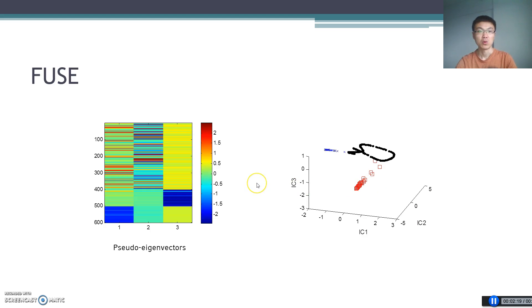Now, we give the results of fuse. From the pseudo eigenvectors space, we can see that the three clusters are separated quite well.